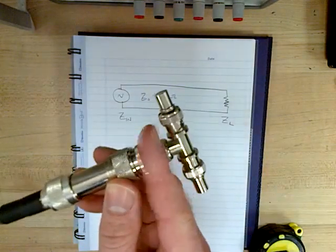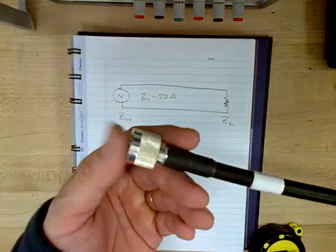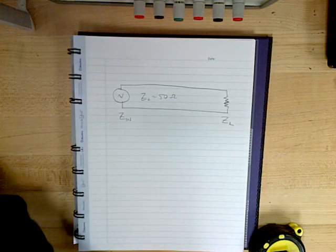This is the load right here, which has a particular impedance. Here's the transmission line, and then we would be measuring the impedance at the other end here. But before we measure it, we need to predict what it will be.